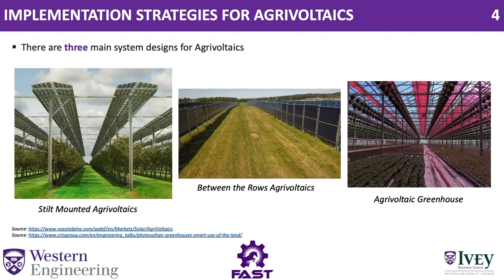The three main strategies normally used in Agrivoltaics are: stilt mounted Agrivoltaics, where solar panels are mounted four to five meters high and vegetation and cropping is done underneath them; between-row Agrivoltaics using vertical PV racks with the field in between the PV panels — this picture is from Germany; and lastly, Agrivoltaic greenhouses, where the panels of the greenhouse are transformed into solar panels to generate electricity while cropping continues inside the greenhouse.